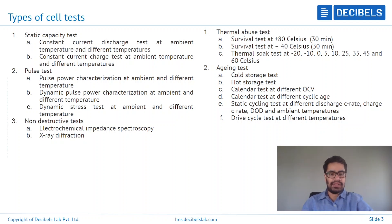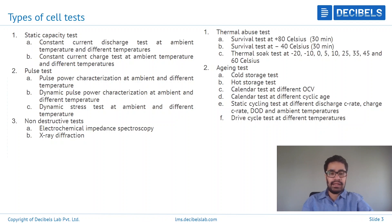Coming to non-destructive type tests, or basically internal structural tests, we have two main types. The first is electrochemical impedance spectroscopy, which gives a complete analysis of how the chemical processes inside the cell take place at different states — basically different points in the cell's operation, starting from brand new or fresh condition through to aged and end-of-life. The second is X-ray diffraction, which is another non-destructive method where complete internal imaging at the microscopic level is done to see how exactly the internal structure of the cell starts to degrade over time.